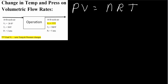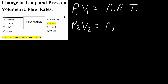In our case, we have two streams: stream 1 and stream 2. Stream 1 is our input stream and stream 2 is our output stream. So we have P1, V1, and T1. In both cases, N is the same number — it doesn't change. We also have P2, V2, and these equal N1 since they're the same number.